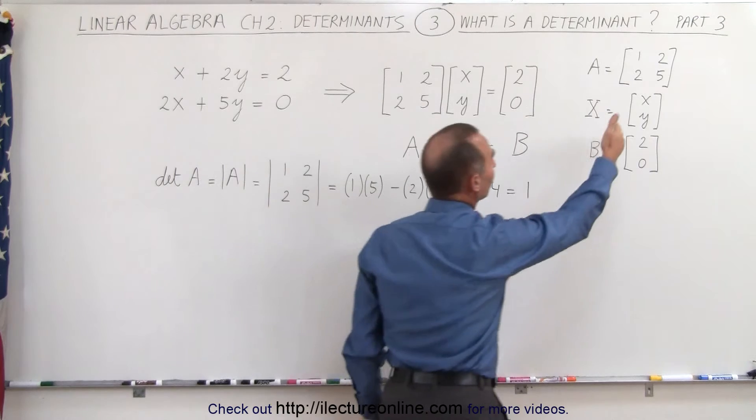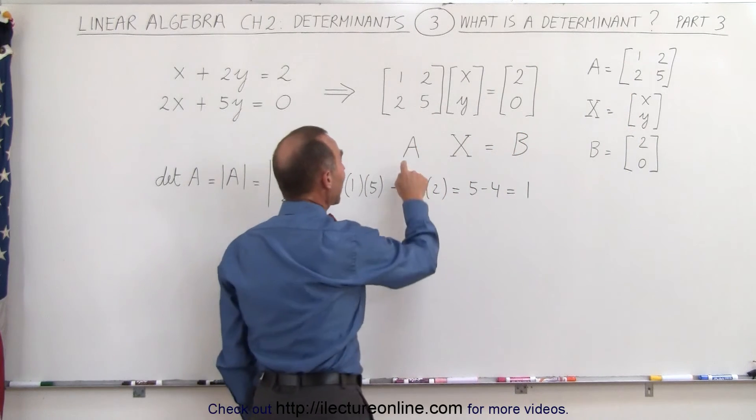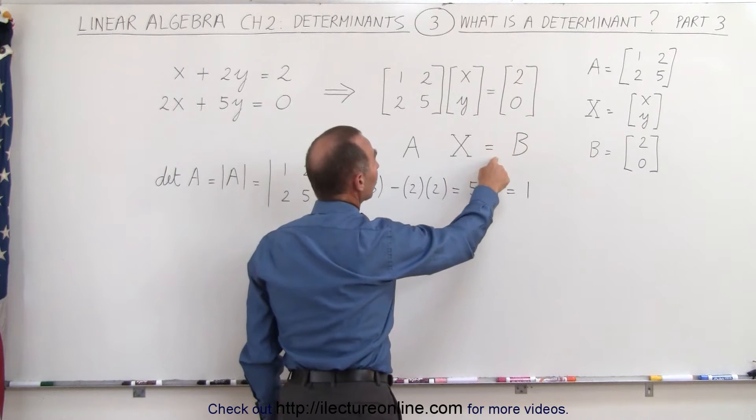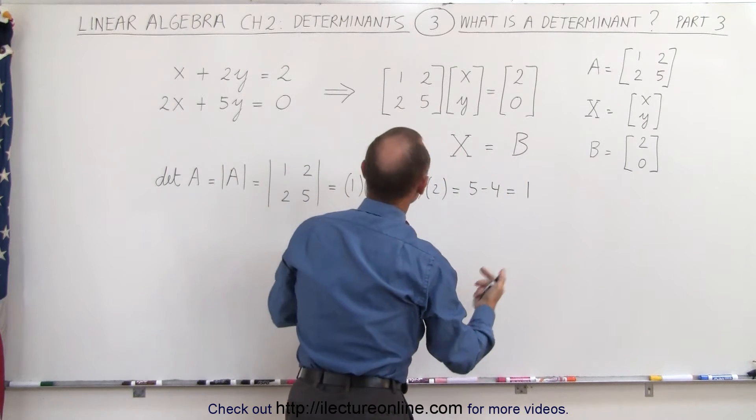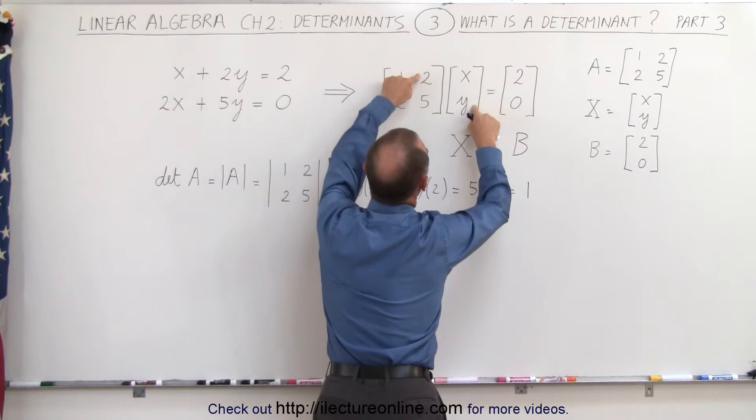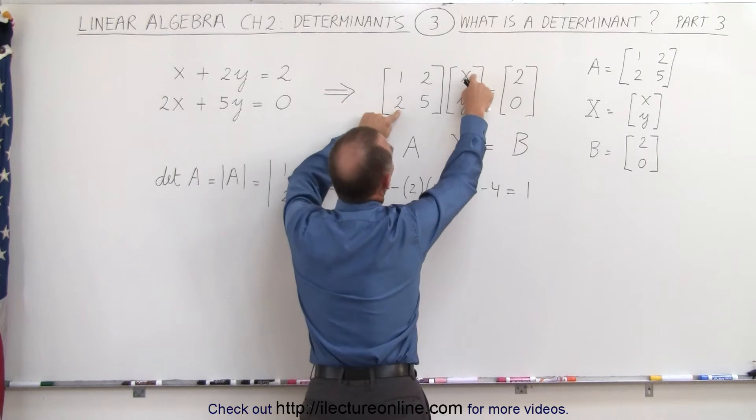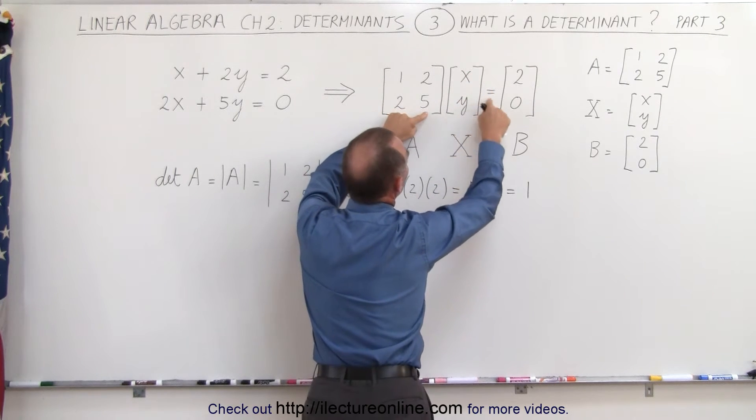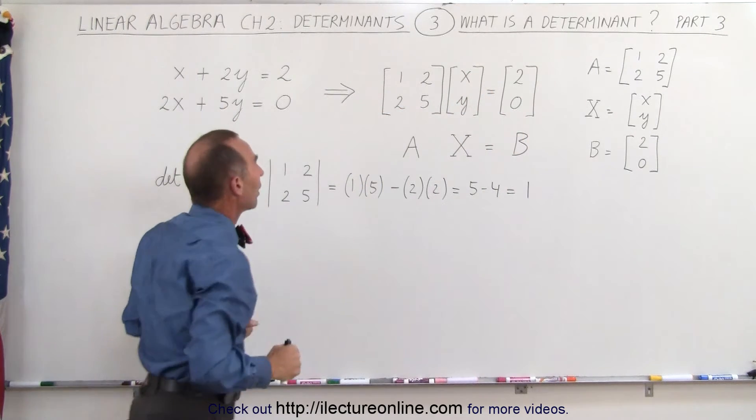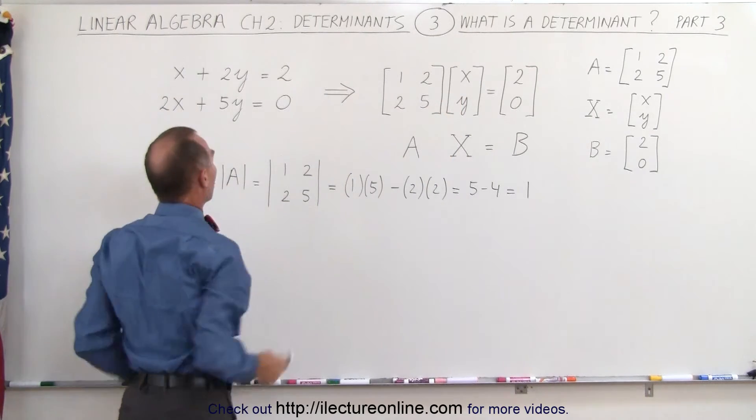Here are the three matrices defined by themselves. We see that A times X equals B. If you multiply 1 times x plus 2 times y equals 2, that gives you the first equation, and 2 times x plus 5 times y equals 0 gives you the second equation. In other words, this is the matrix format of these two equations.